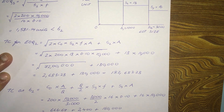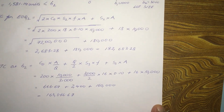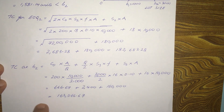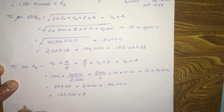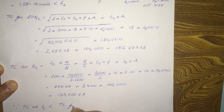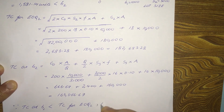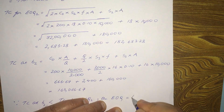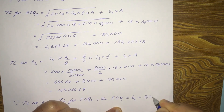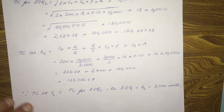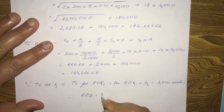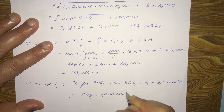Comparing the two: TC at B2 (1,63,066.67) is less than TC for EOQ2 (1,82,683.28). Since TC at breakpoint B2 is lower, the economic order quantity equals B2, which is 3,000 units. Therefore, the EOQ for this problem is 3,000 units.